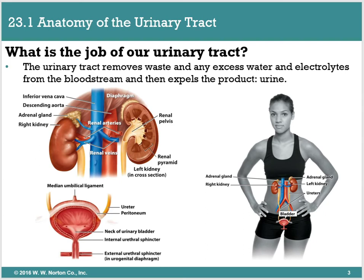The basic anatomy of the urinary tract is the kidneys as well as the ureters and the bladder. Those are the three main things that comprise the urinary tract. The job of the urinary system is to remove waste or any excess water or electrolytes that come from the bloodstream and then it gets expelled out in the urine.